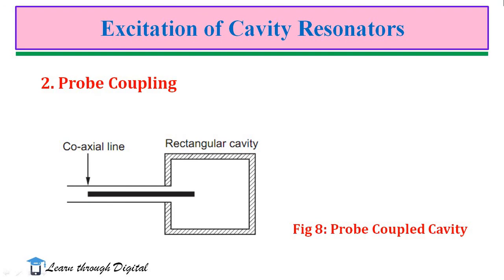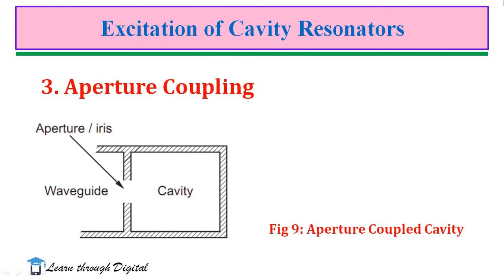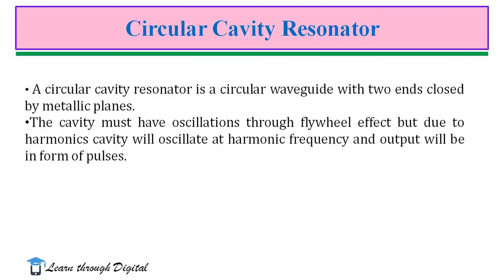Another type is probe coupling, where a rectangular cavity is probe-coupled to a coaxial line. Any cavity mode having an electric field component parallel to the probe can be excited by this arrangement. The third type is aperture coupling, also called iris coupling. Here, an aperture or iris is provided in the waveguide section. A magnetic field component parallel to the long dimension of the slot is coupled through the aperture. These are the various types of excitation of the cavity resonator.